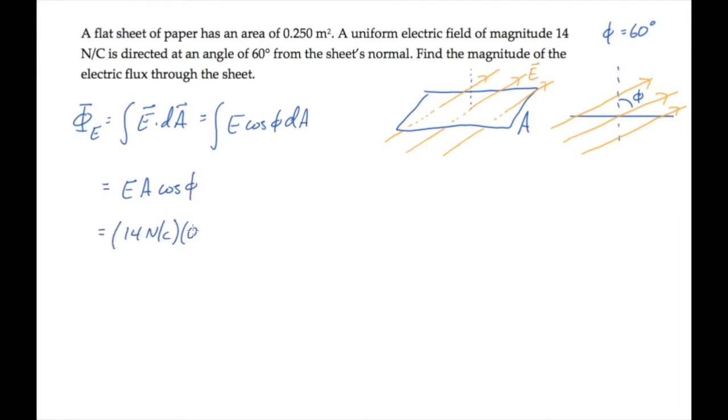The electric field has a magnitude of 14 newtons per coulomb. The sheet's area is a quarter of a square meter, and the angle phi is 60 degrees. So this gives us an electric flux of 1.8 newton meter squared per coulomb.